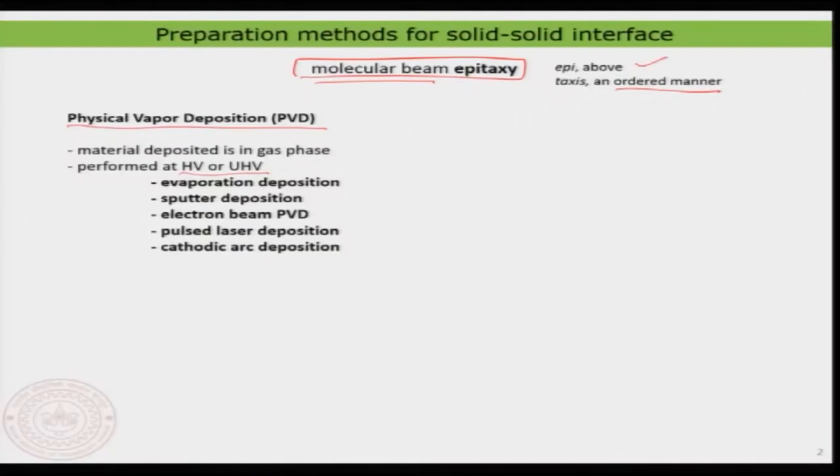We will look at two major methods that people use to make these kinds of ad layers or thin films. The most general and simplest method is physical vapor deposition, or PVD. Physical vapor deposition is done — and this is the most important thing — either in high vacuum or in ultra-high vacuum chambers. This tells you that physical deposition is an extremely clean methodology for preparing ad layers.